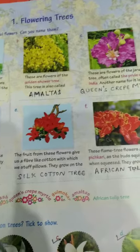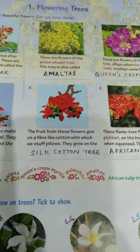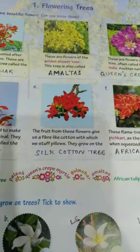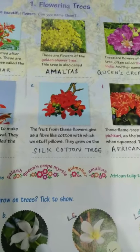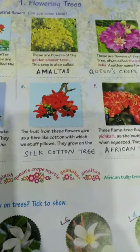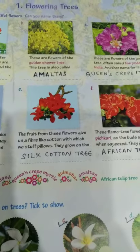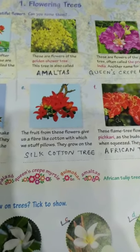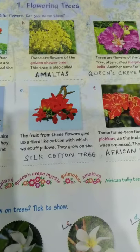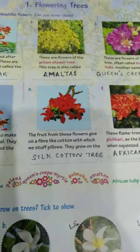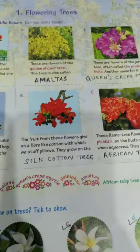See the next one. The fruit from these flowers gives us a fiber like cotton, with which we stuff pillows. They grow on the silk cotton tree. It is a type of native cotton tree with large red flowers. It blooms from February to May and grows up to a height of 25 feet. It is usually found in hot and dry forests. The fiber like cotton from the fruit of this tree is used for filling pillows, sofas, quilts, etc.